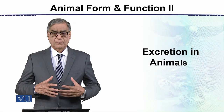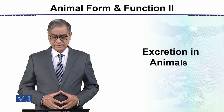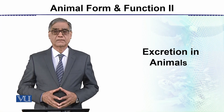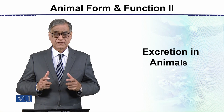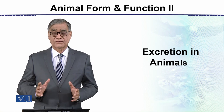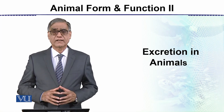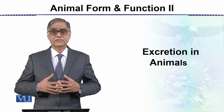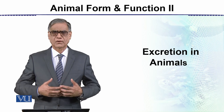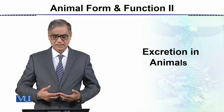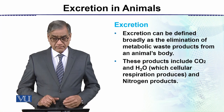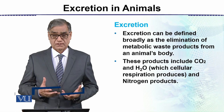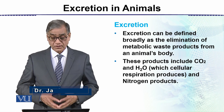Our next topic is excretion in animals. The word excretion should not be confused with defecation. Excretion is the removal of nitrogenous waste. Nitrogenous waste includes ammonia, urea, and uric acid. Broadly, excretion can be defined as the elimination of metabolic waste products from the animal's body.